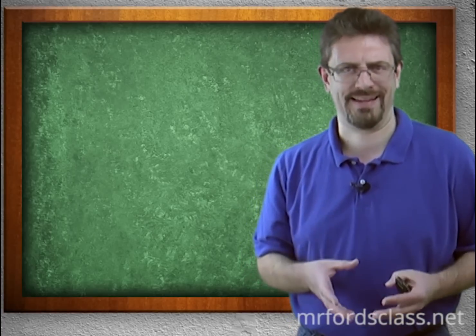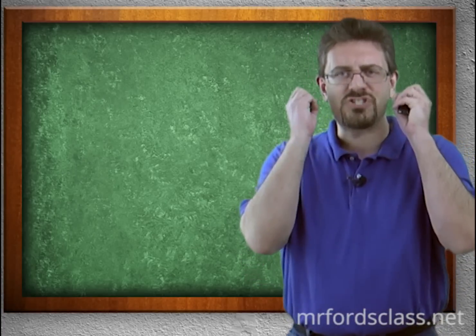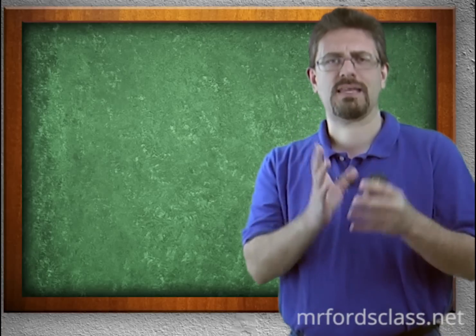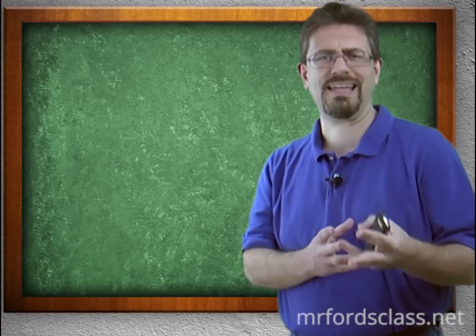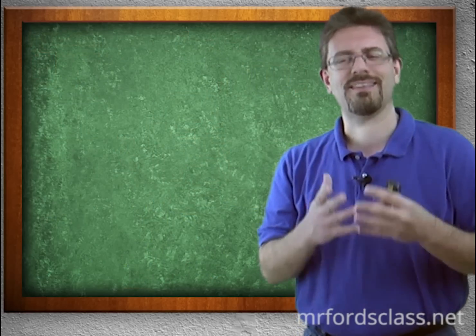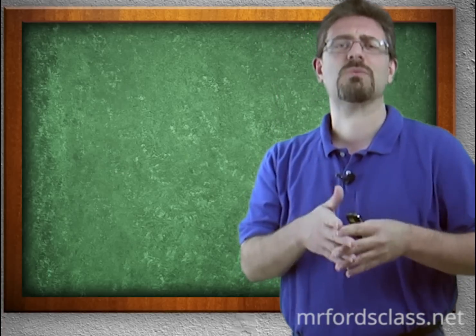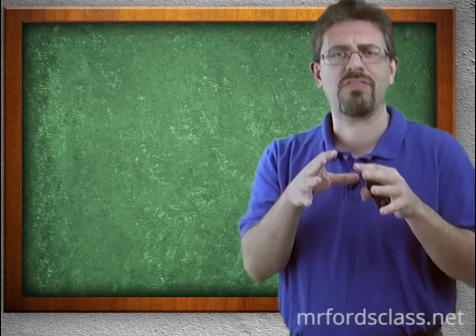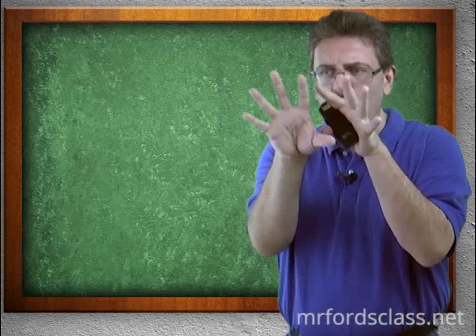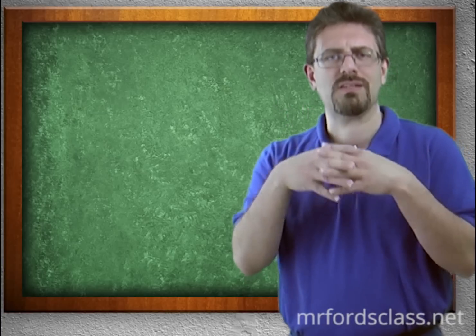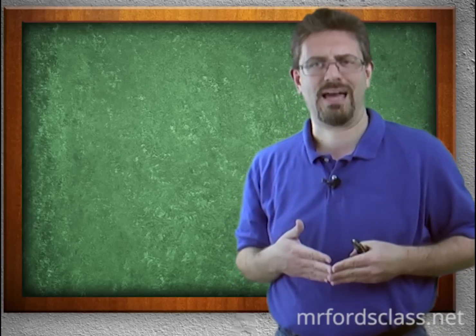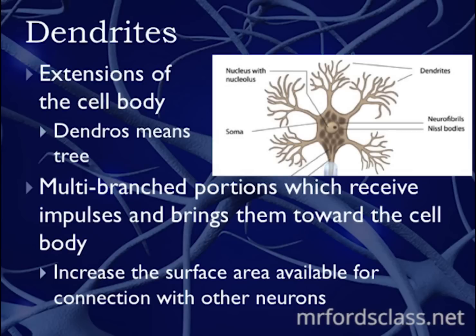Then we have the dendrites — projections that come off the neuron. I always like to think of them as Don King's haircut: just crazy hair sticking straight up. There's a whole bunch of them and they are there to receive signals. The dendrites receive the information and pass it back through the rest of the nerve cell. They are multi-branched portions which receive impulses and bring them towards the cell body, and these short cell processes increase the surface area available for connection with other neurons.